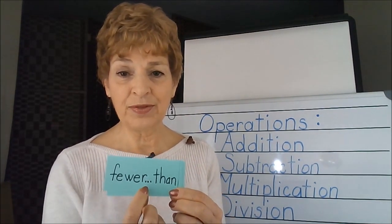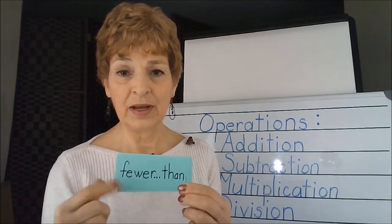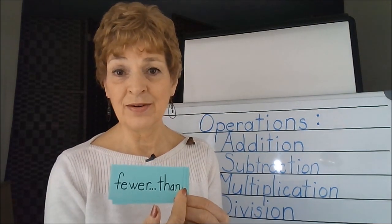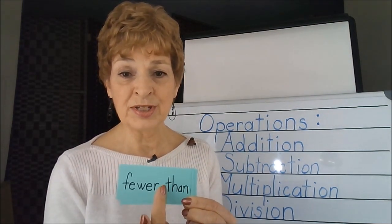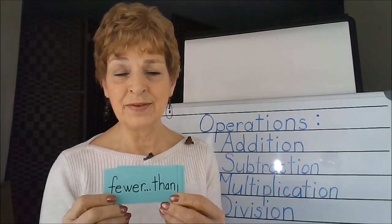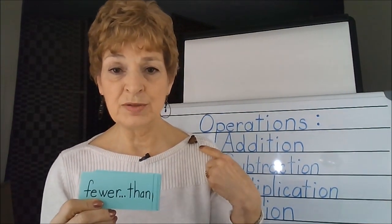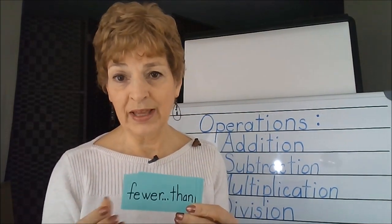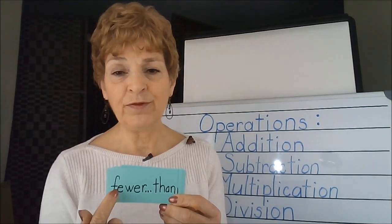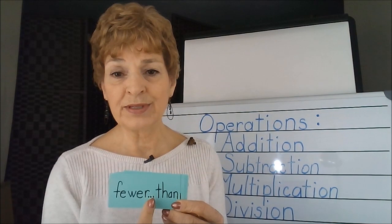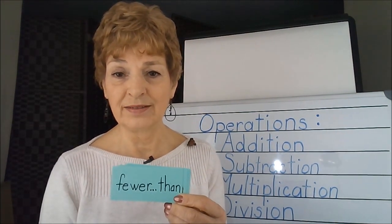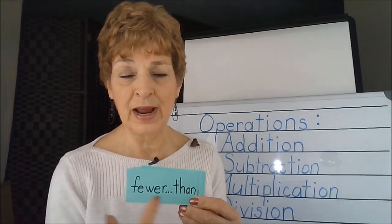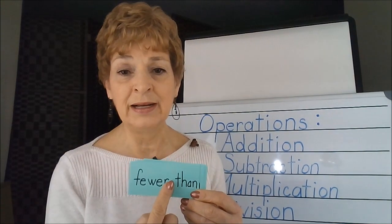Fewer than: the verbiage of the story problem uses the word fewer, and later on in the problem it says than, with other words put in between. For example: a mouse has four legs, a spider has eight — how many fewer legs does the mouse have than the spider? You see how the words fewer and than were broken apart by other vocabulary.